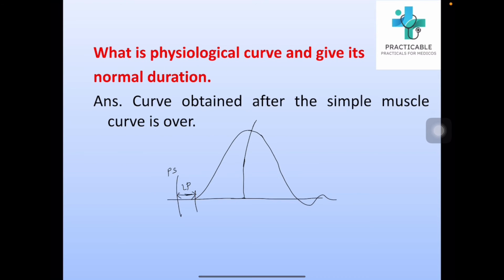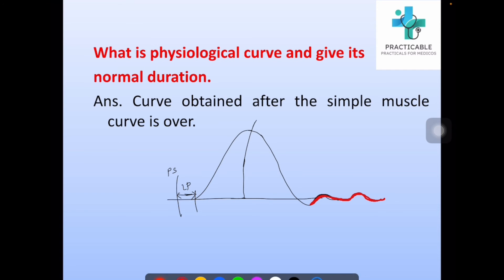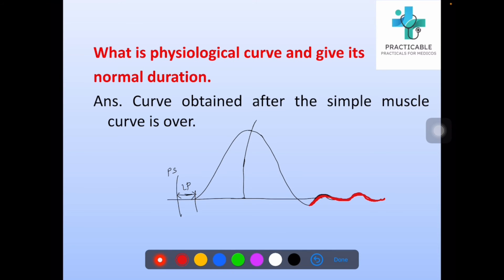What is the physiological curve and give its normal duration? It is the curve obtained after the simple muscle curve is over. It is due to the inertia of the lever. Its normal duration is 10 milliseconds.